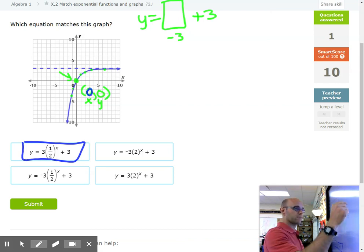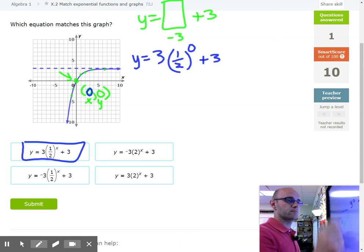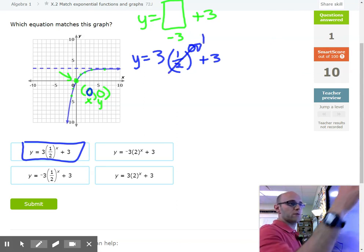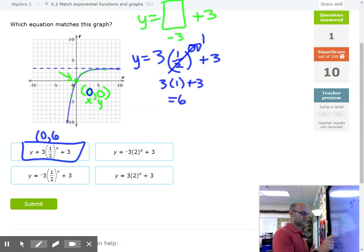So let's take our first one, let's plug in our x value of zero, see what would happen. So we'd have, for the first equation, y equals three times one half to the zero plus three. Okay, one half to the zero, anything to the zero becomes a one, so this is going to turn into three times one plus three. Okay, that's going to give us a six. Okay, so this equation has zero comma six. We plugged in a zero, we got a six. That's not the point this graph has.